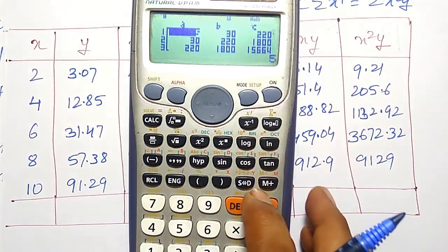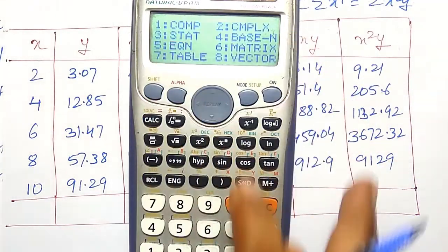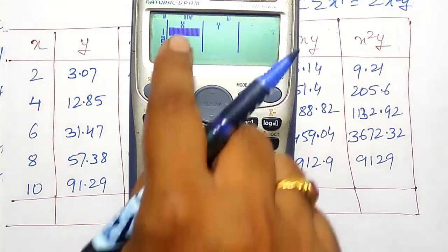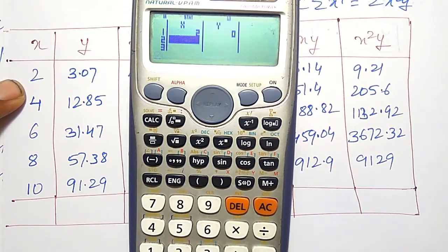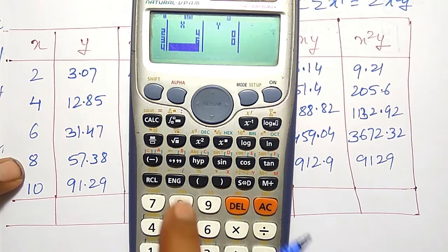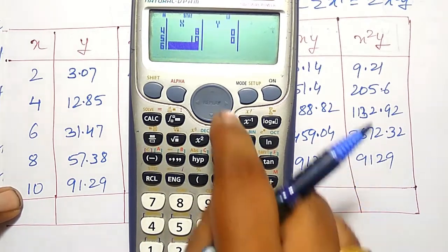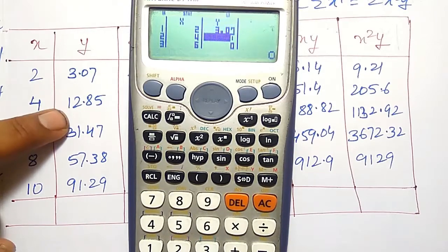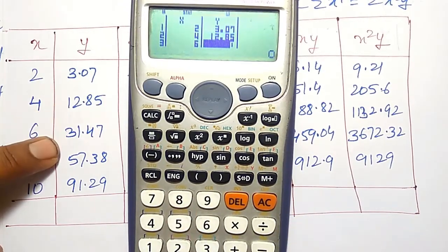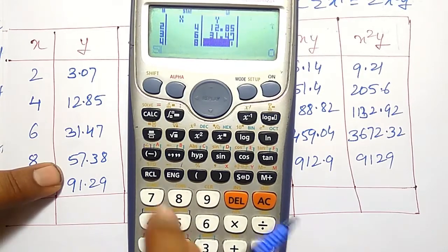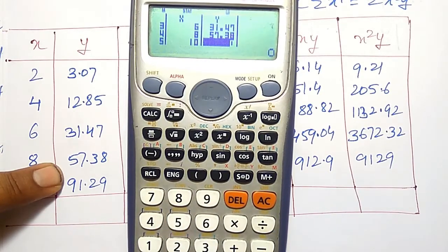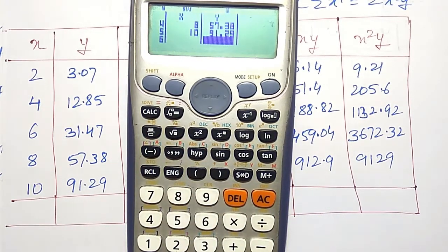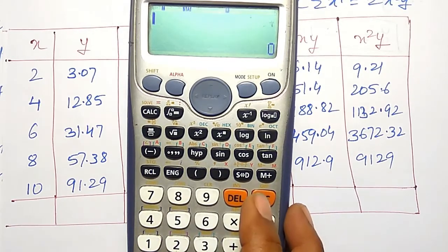In the calculator, we will go for the mode, stat mode 3 and I will choose a plus bx. Therefore, two variables we will get, x and y. X values I will enter 2, 4, 6, 8 and 10. Like that, y values also I will enter: 3.07, 12.85, 31.47, 57.38 and finally 91.29. Both values are entered. Then AC button to save in memory.